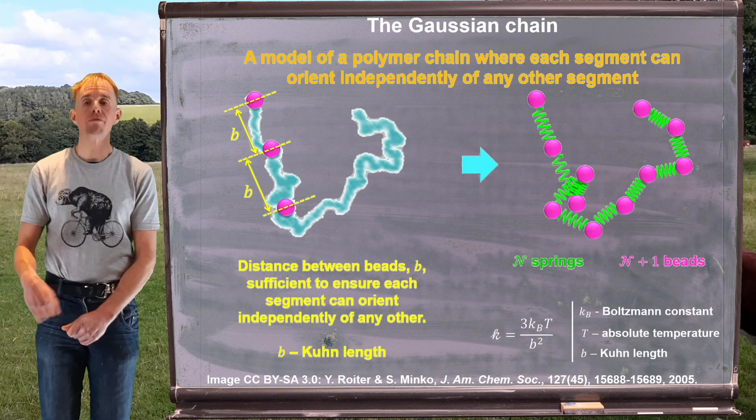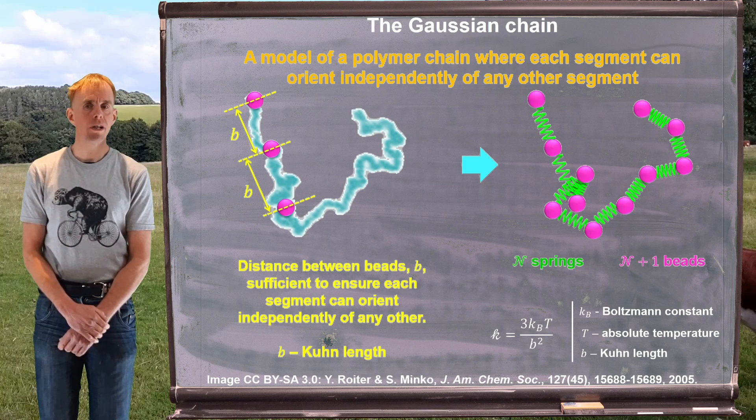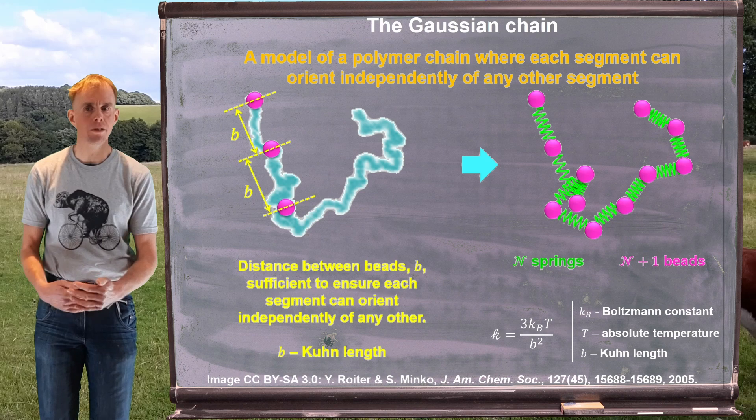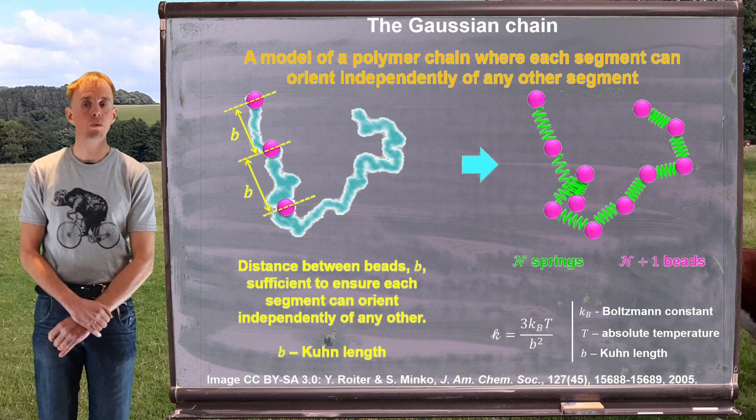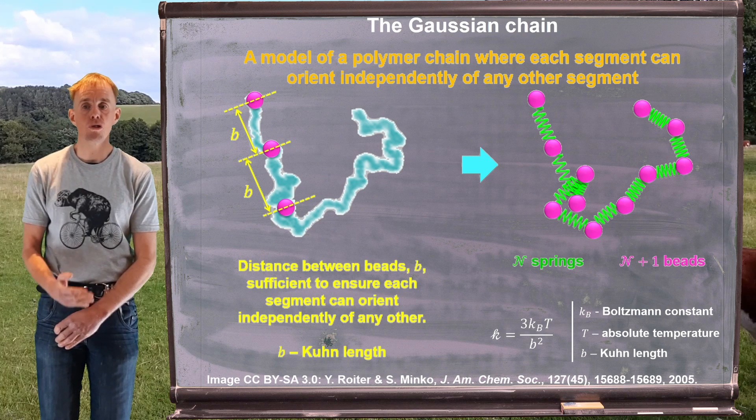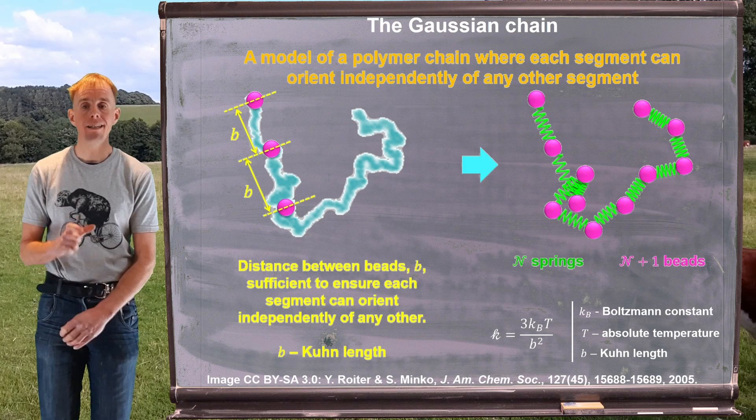When it comes to deriving the rheological behavior of such a Gaussian chain, we're going to need to know certain physical properties, like for example the spring constant. In this case, the spring constant can be worked out using notions such as the Boltzmann constant, the absolute temperature, and that Kuhn length.